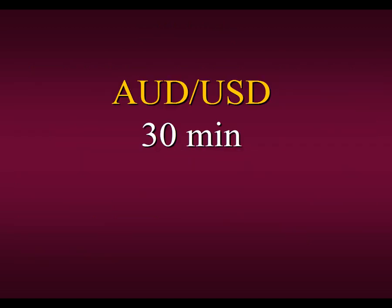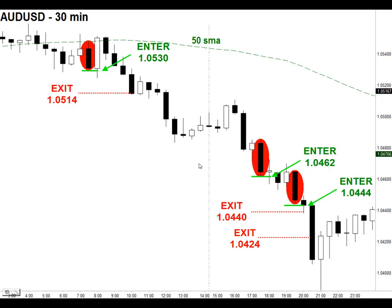Let's look at our first example here in the Australian dollar at a 30-minute timeframe. We usually have been posting signals for strategy number five looking at daily bars only, but let's see how it works on an intraday timeframe. The first thing we ask ourselves, as with all of our strategies, is where is price in relation to the buy-sell line — the buy-sell line being our 50-period simple moving average. As you can see, for all intents and purposes, price is below the buy-sell line, so this means we're only looking to go short.